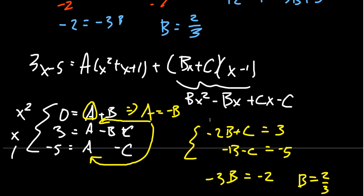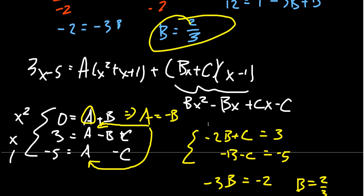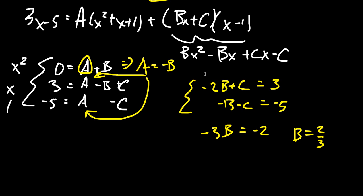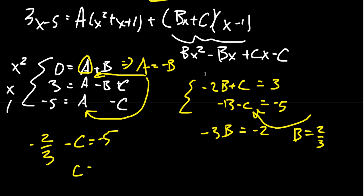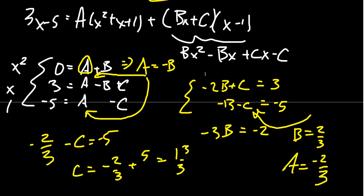That's the same as what we saw above — B was 2/3. Once you have that, plug it back in: -2/3 - C = -5, so C = -2/3 + 5 = 13/3, just as before. Then from the first equation, A + B = 0, so if B = 2/3, A = -2/3. I think the system of equations is a little bit cleaner in this case. You can try the annihilation technique as well.